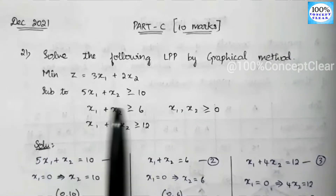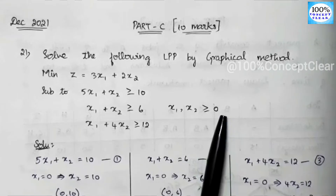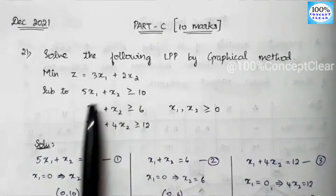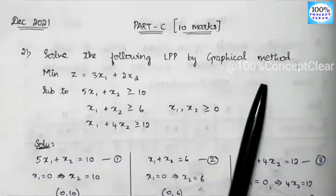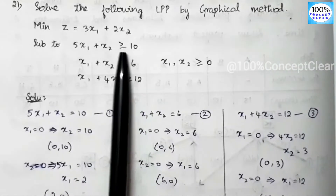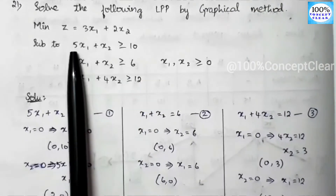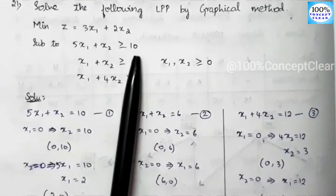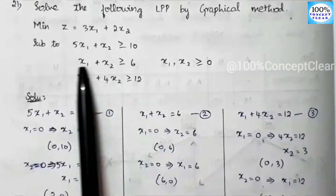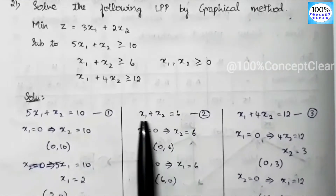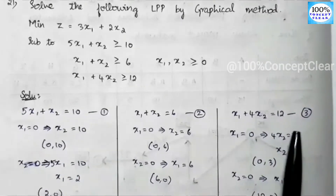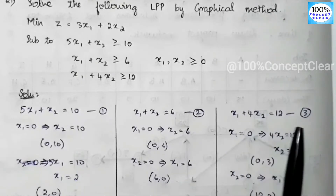Subject to constraints, there are 3 constraints. x1 and x2 values should be greater than or equal to 0. The first constraint is 5x1 plus x2 greater than or equal to 10, so 5x1 plus x2 equals 10. The second constraint is x1 plus x2 equals 6. The third constraint is x1 plus 4x2 greater than or equal to 12, so x1 plus 4x2 equals 12.